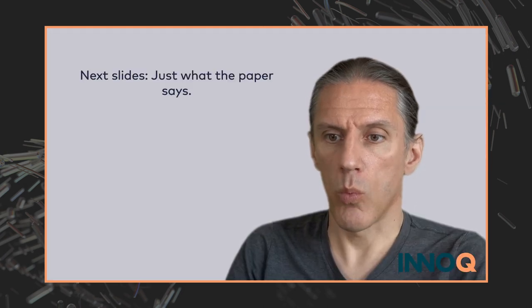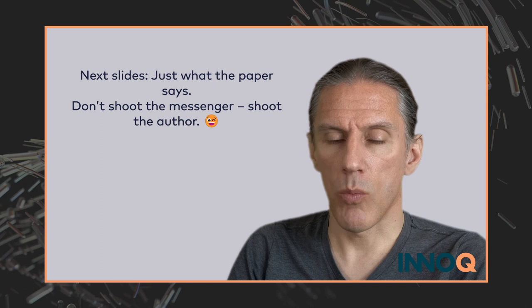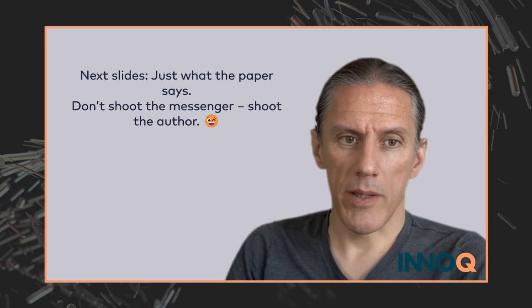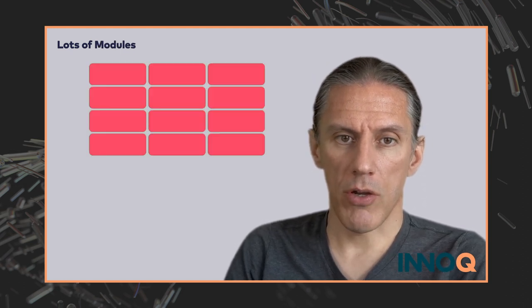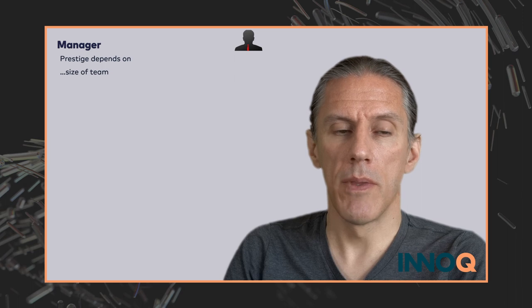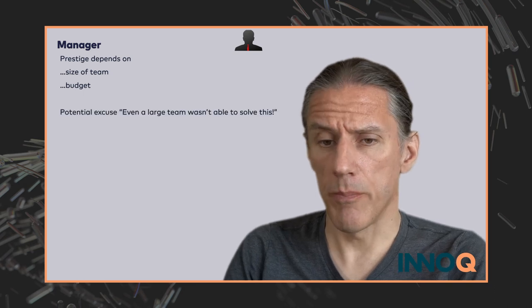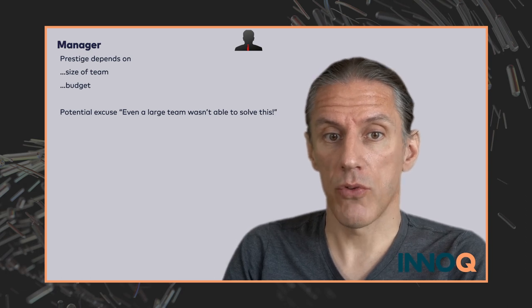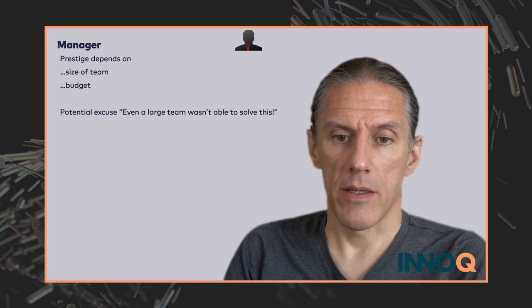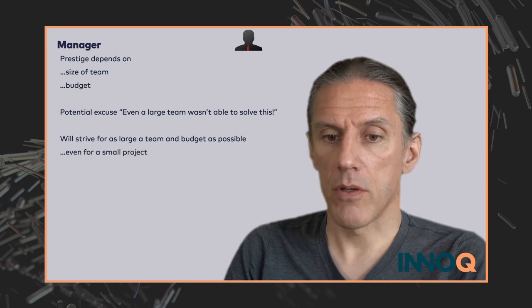On the next few slides I'll present what the paper says — so don't shoot the messenger. The paper says that if there are lots of people in your project, there will be lots of modules. The manager of such a system — well, the prestige of that manager depends on the size of the team and the budget he or she is responsible for. Also, if you have a large team, then there is a potential excuse: even this large team wasn't able to solve this specific problem. So a manager is incentivized to strive for a large team and a large budget, even if the project is small.